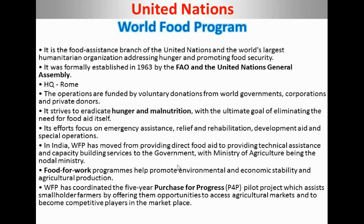The Food for Work program helps promote environmental and economic stability and agricultural production. The most important project is 'Purchase for Progress' (P4P). P4P ensures that small farmers use sustainable development practices and receive job opportunities. It helps them access agricultural markets, use modern scientific tools, and become competitive at a higher level.